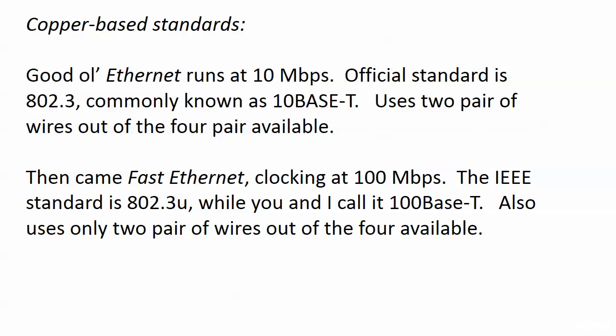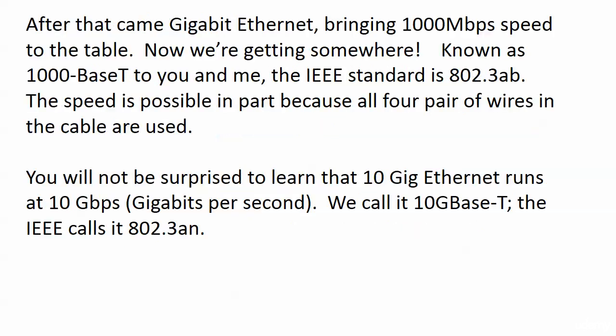Then came Fast Ethernet at 100 Mbps, IEEE standard 802.3u, commonly called 100BaseT, also using only two pairs of wires. Now, wouldn't it be good to use all the wires? We didn't have the technology originally, but now we do — and that allows Gigabit Ethernet to exist. This is 1000BaseT in common usage, and the official IEEE standard is 802.3ab. The speed is possible in part because all four pairs of wires in the cable are used. We'll revisit Gigabit Ethernet in a few minutes to see another big reason that speed is possible.